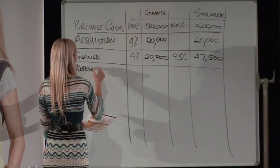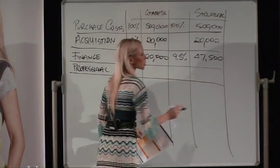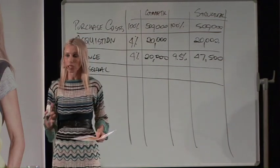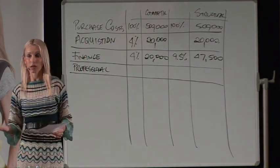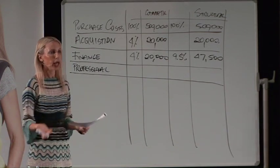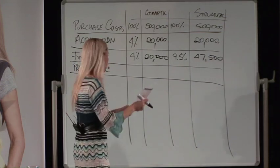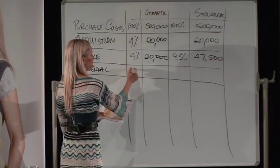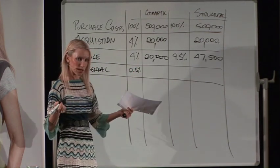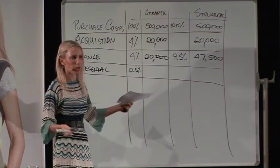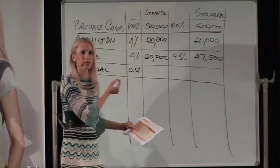Professional costs — you typically don't have any for a cosmetic renovation, but for a structural renovation that covers your draftsman, architect, due diligence costs, structural engineer, hydraulic engineer — the whole design team. I've put a little bit of fat in there for a cosmetic reno to allow for any due diligence or surveyor costs. That's 0.5% of $500,000, which is $2,500.